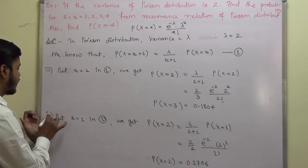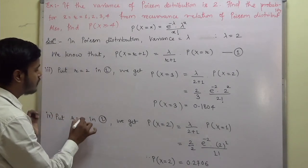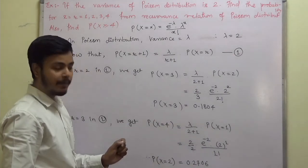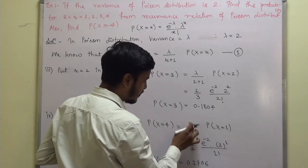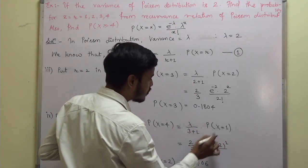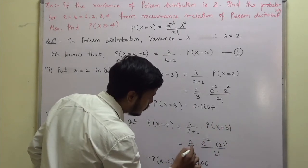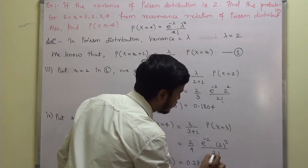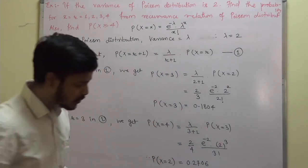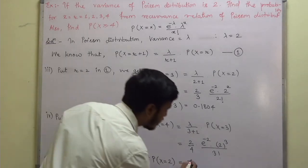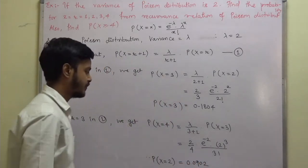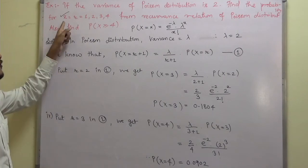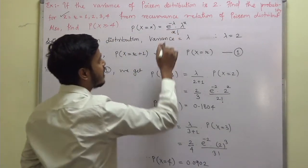To find P(X = 4), put r = 3 in the recurrence relation: P(X = 4) = lambda upon 4 into P(X = 3). With lambda = 2, this gives 2 by 4 into e to the power minus 2, 2 to the power 3 upon factorial 3, which comes out to be 0.0902. So we have found probabilities for r = 1, 2, 3, 4 and the first part is complete.